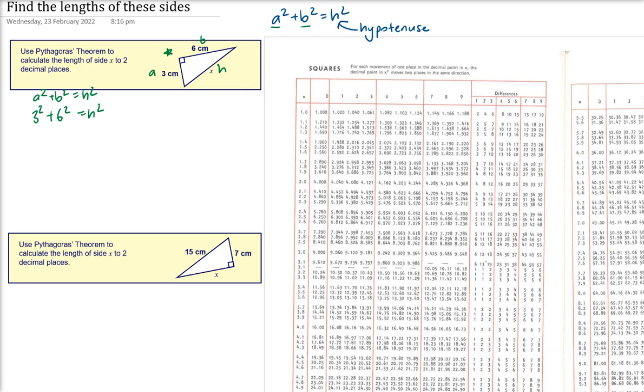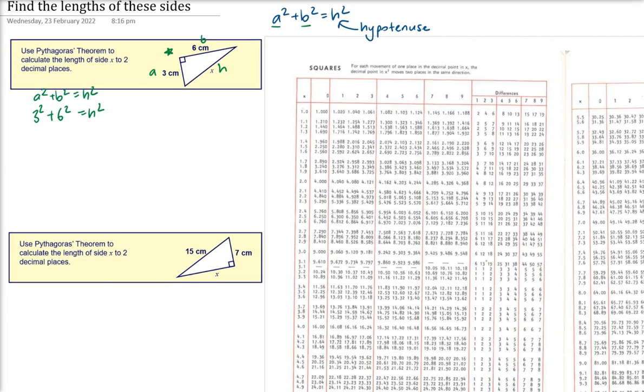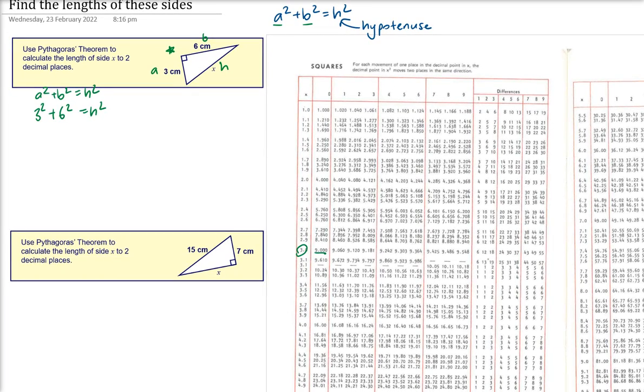Now remember, 3 and 6 are probably easy to do, but decimals are not as easy to do. So 3 squared is 9, and 6 squared is 36, so that's 9 plus 36 is equal to h squared. And so therefore h is the square root of 45.